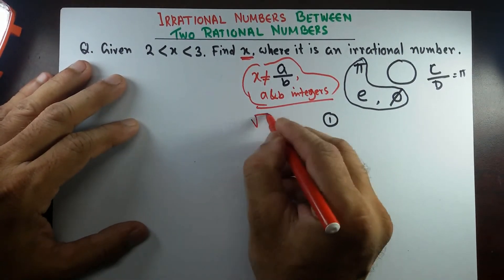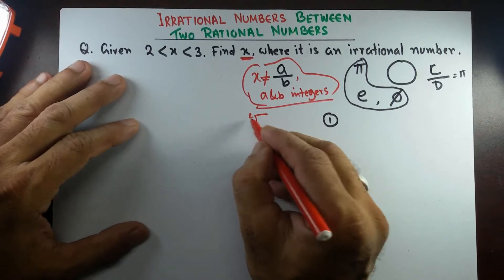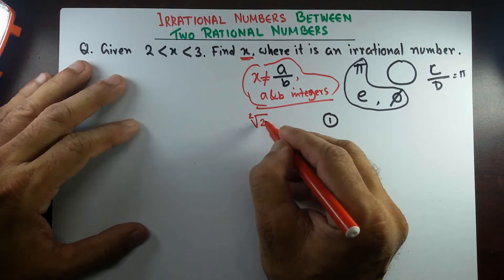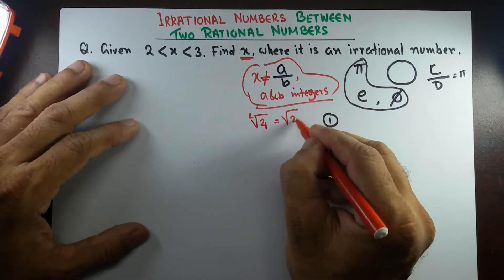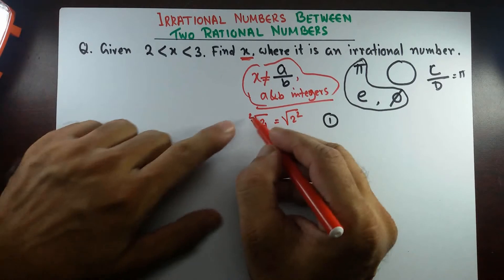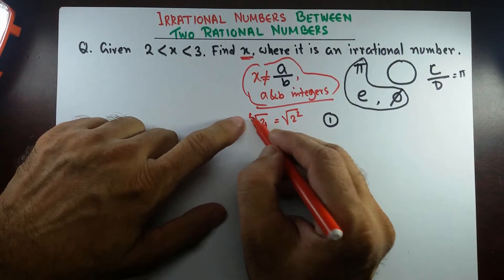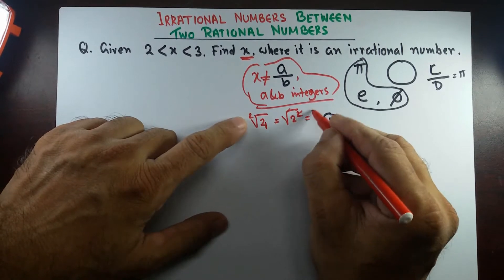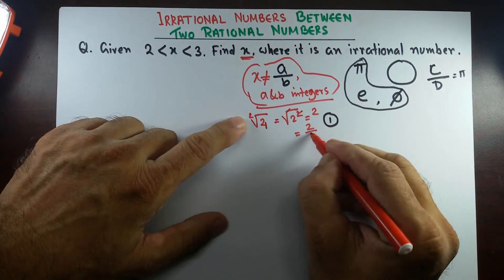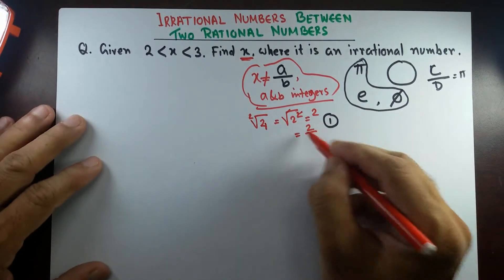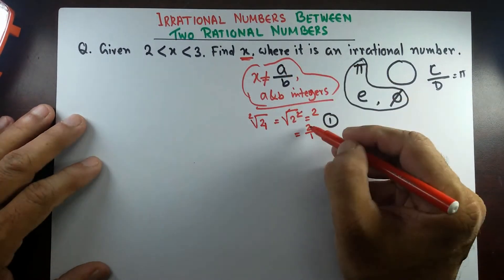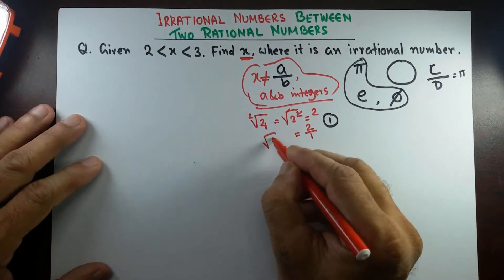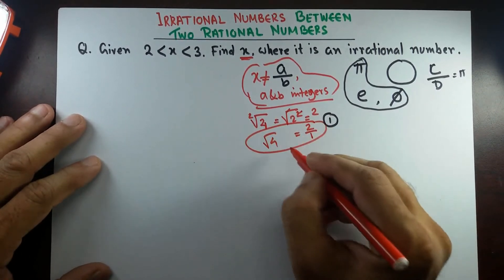Let's think about square root of 4. Square root of 4 can be written as square root of 2 squared, the square and square root cancel out, and it becomes 2. Now 2 can be written as 2/1, and that is a rational number — both numerator and denominator are integers. So square root of 4 is actually a rational number.